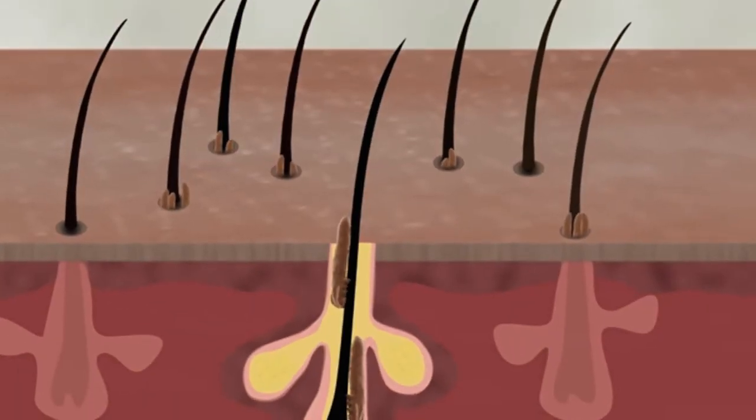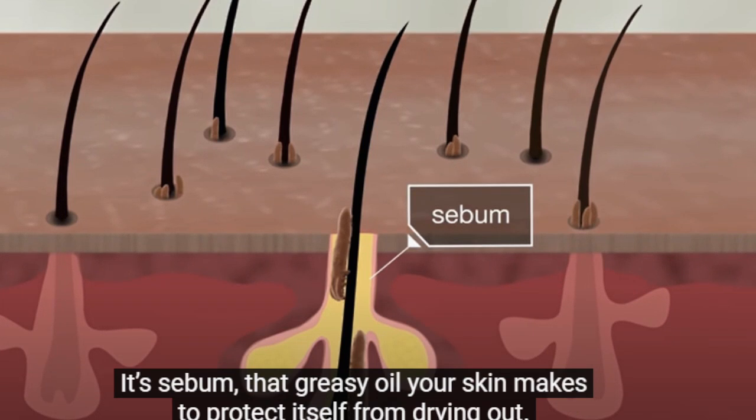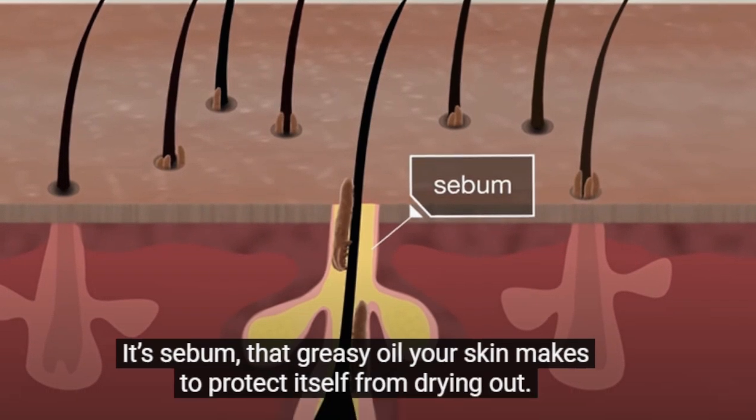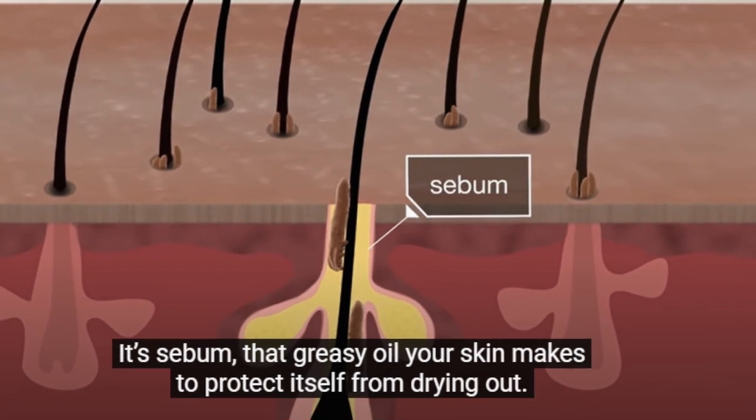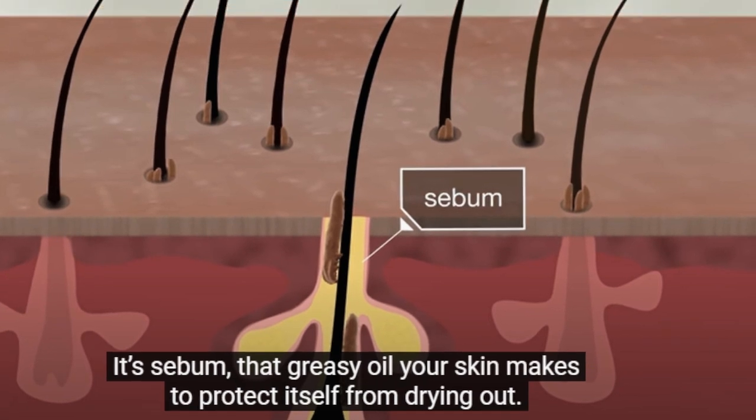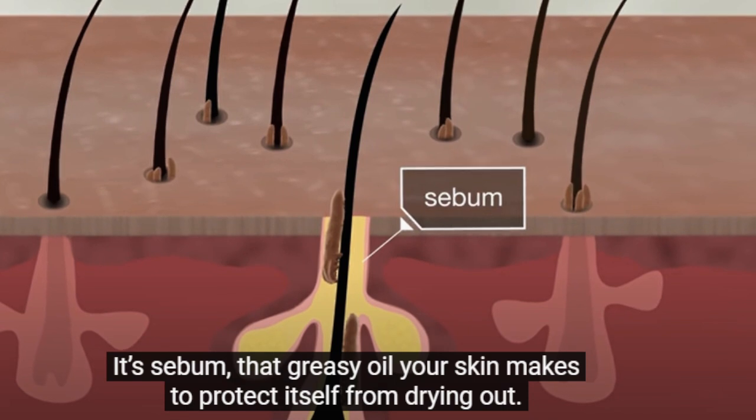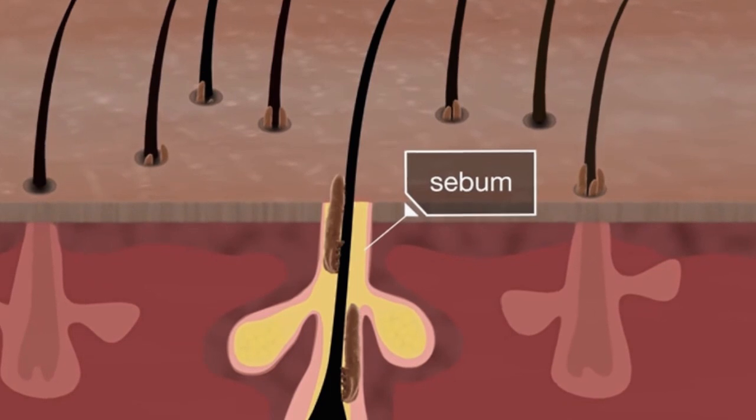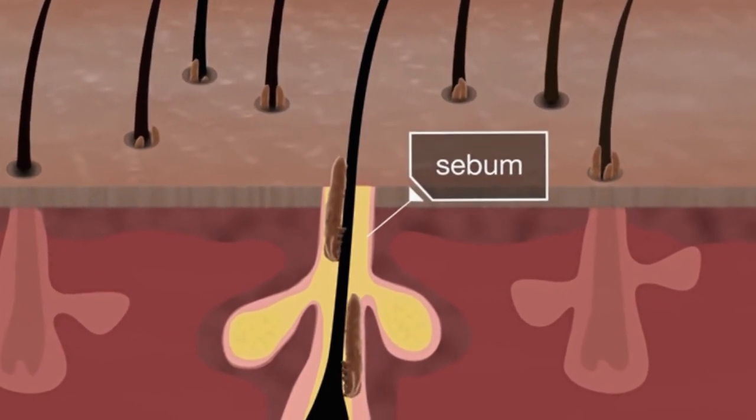The green object you are seeing on the screen is actually called sebum, and this sebum is their food. Yes, these face mites eat from this sebum. At night when you are sleeping, sometimes as I said, they can come out of your skin.